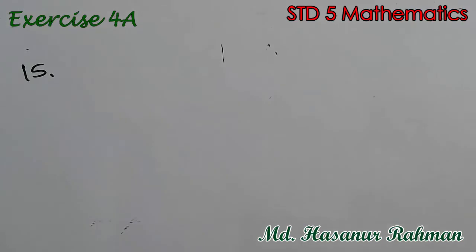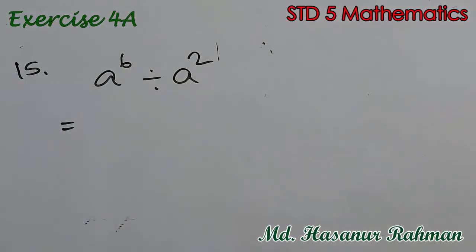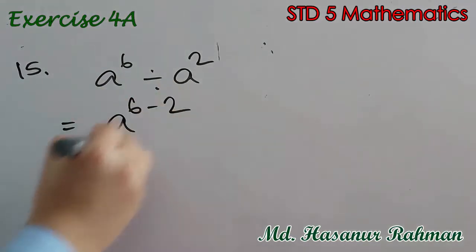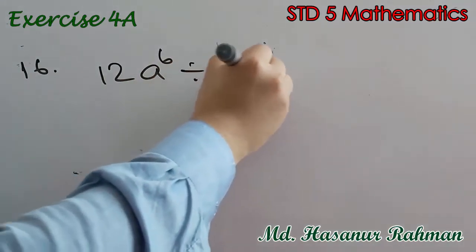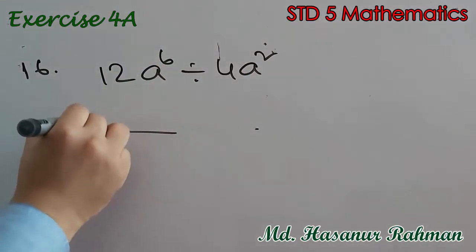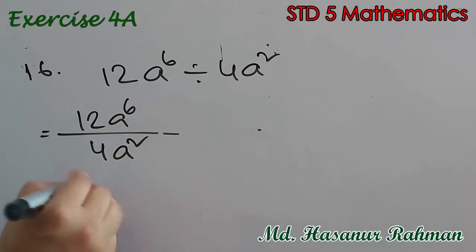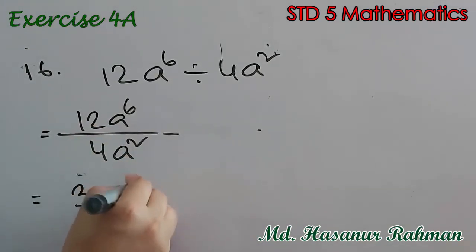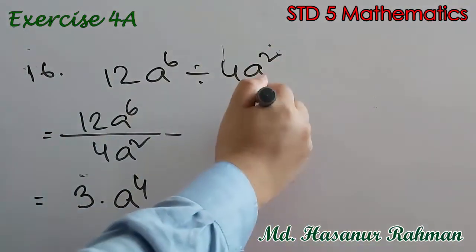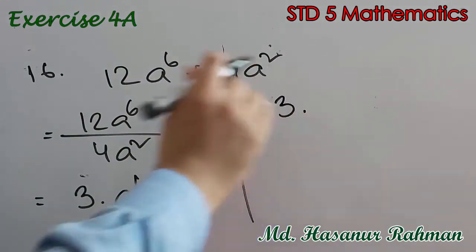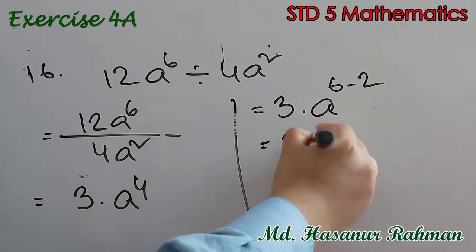Number 15 says a to the power 6 divided by a squared. Both bases are the same, so we subtract the powers: a to the power 6 minus 2, that means a to the power 4. Number 16 says 12a to the power 6 divided by 4a squared. Now 12 divided by 4 is 3, into a to the power 6 divided by a squared. Subtracting powers gives a to the power 4, so the answer is 3a to the power 4.